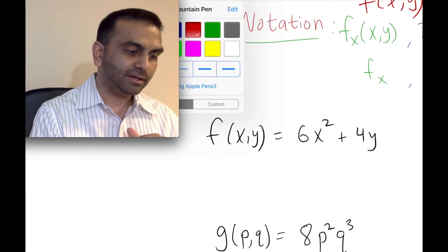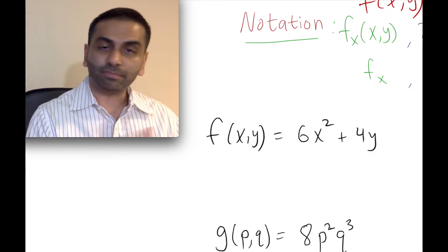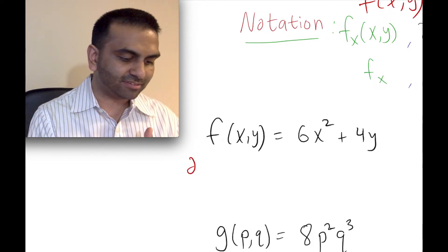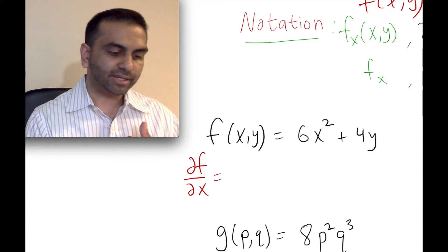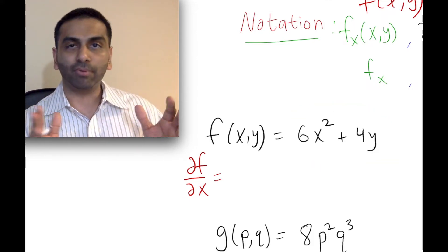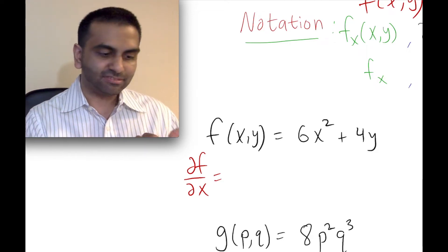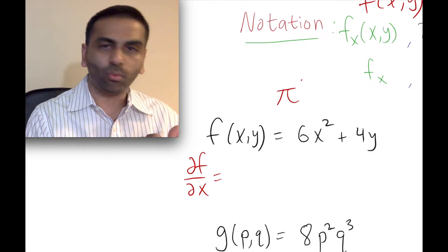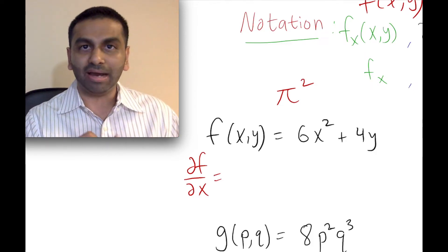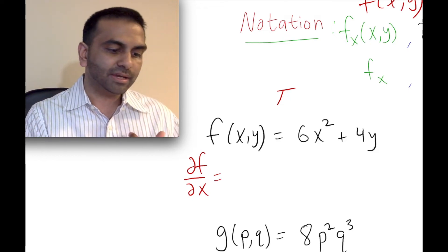For example, if we're taking the partial derivative with respect to x, imagine that every letter other than x is a number. Think of pi — pi is a number. If I asked you to take the derivative of pi squared, you wouldn't say 2pi; you'd say 0. Because pi squared is still a number, and the derivative of a number is 0. The derivative of 5 is 0.